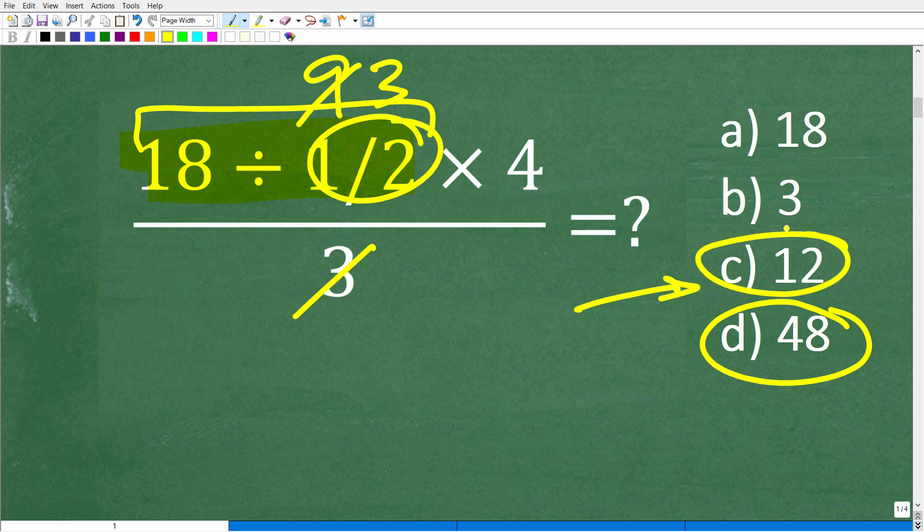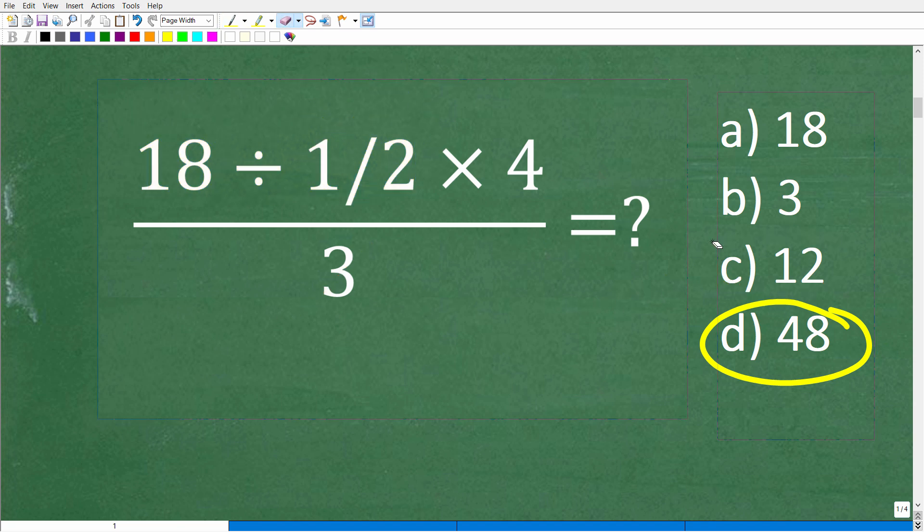So if you answer 12, well, that is one way you could get that wrong answer. But someone else could have maybe started the problem this way and said, well, 1/2 times 4. So 1/2 times 4 is what? Well, 1/2 of 4 is 2.